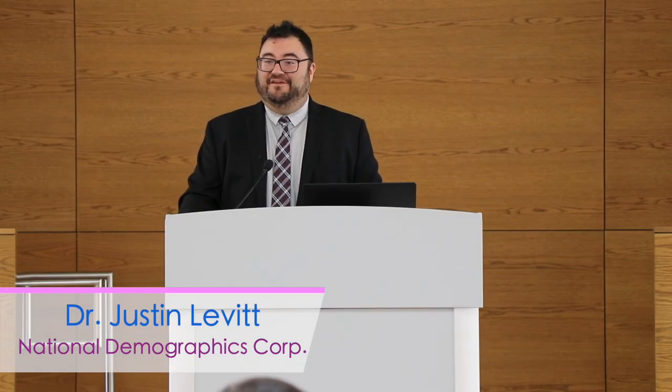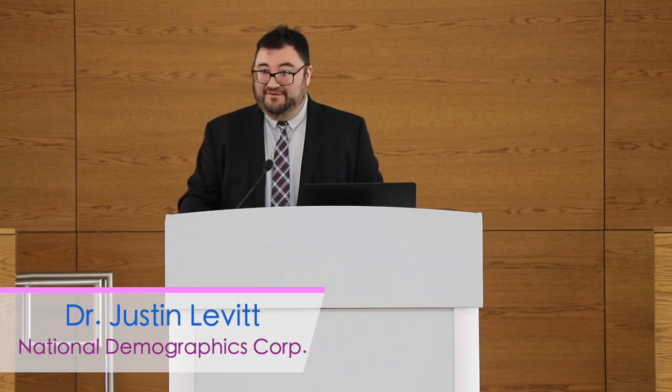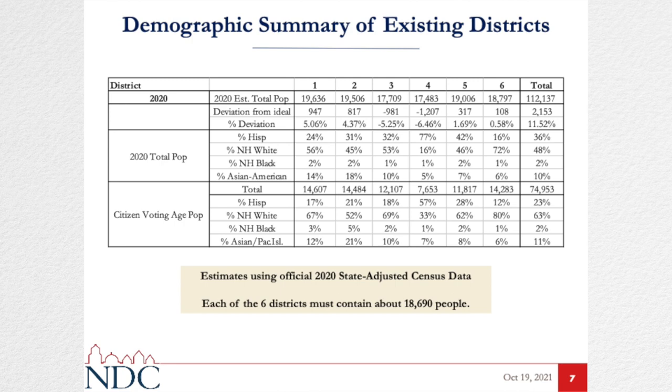I have not done a formal voting rights analysis, but this was one of the issues raised in the demand letter that led to the city switching to district elections in the first place. One of the challenges with Latino districts throughout the state is translating total population into actual performing districts. If we look at the total population, District 4 is 77% Latino. But going from total population to eligible voters — citizen voting age population — it drops to 57%. And we can see it drops further when we look at registration and voting, particularly turnout in an off-cycle midterm election.